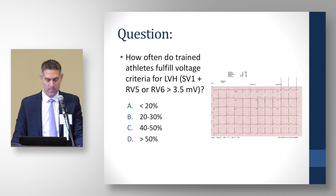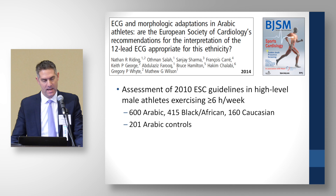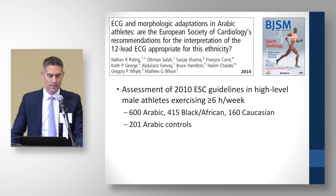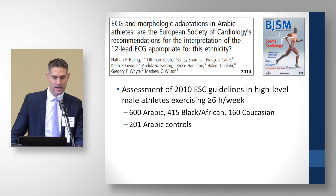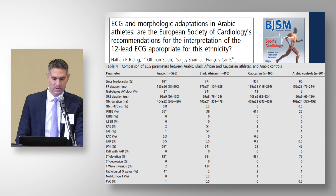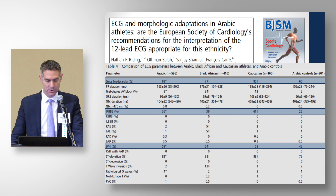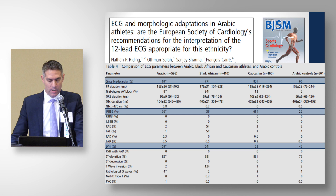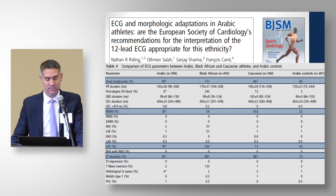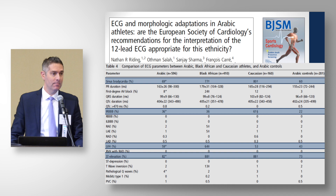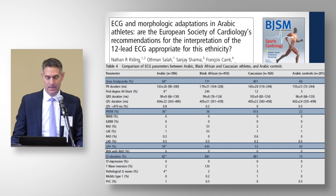A study by Nathan Riding from the Aspitar group assessed the 2010 ESC guidelines in high-level male athletes exercising more than six hours per week — 600 Arabic athletes, 415 Black or African athletes, 160 Caucasian athletes, and 200 controls. Sinus bradycardia was quite prevalent; incomplete right bundle branch block occurred in 30–60% of athletes; LVH voltage criteria in over 50%; and ST elevation or early repolarization findings in over 80%. We can't use a criterion that occurs in more than half of athletes to distinguish pathology from normalcy.